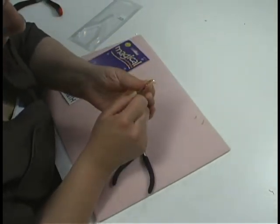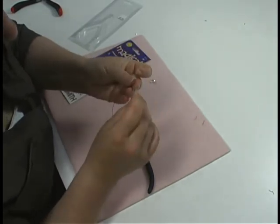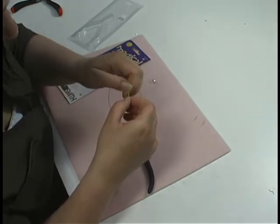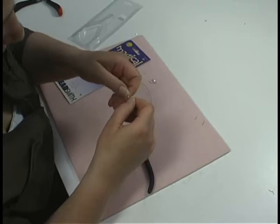So we are going to string on the crimp bead, bring the wire back through the crimp, very similar to how you would use a regular crimping plier.